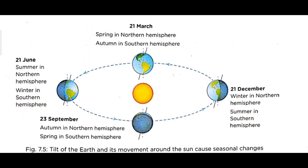You can see in the diagram: on the 1st of March, it is spring in the Northern Hemisphere and autumn in the Southern Hemisphere. In June, it is summer in the Northern Hemisphere and winter in the Southern Hemisphere. On the 23rd of September, it is autumn in the Northern Hemisphere and spring in the Southern Hemisphere. On the 21st of December, it is winter in the Northern Hemisphere and summer in the Southern Hemisphere.